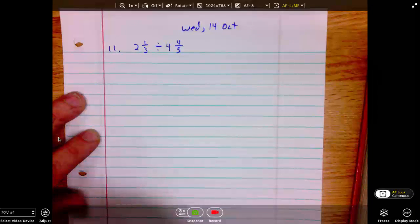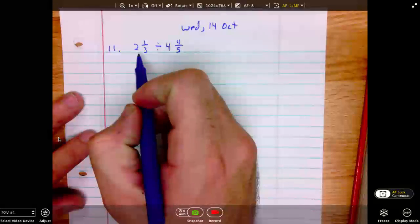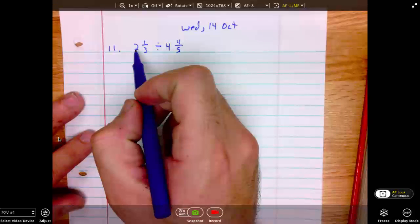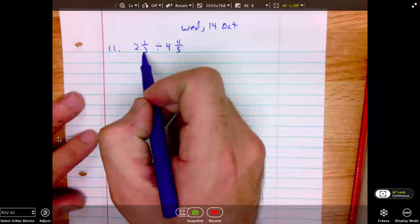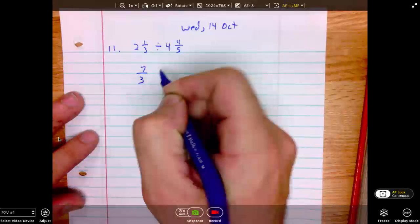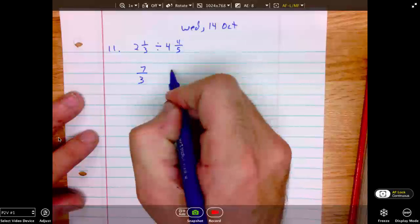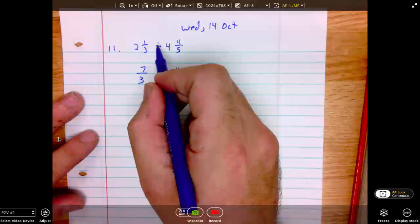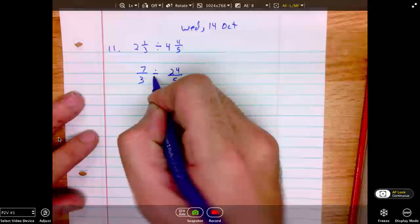First, we will convert to a mixed number, pardon me, to an improper fraction. 2 times 3 is 6 plus 1 is 7. 7 over 3. 4 times 5 is 20 plus 4 is 24. 24 over 5. Keep this division the same at this point.